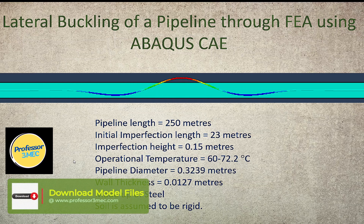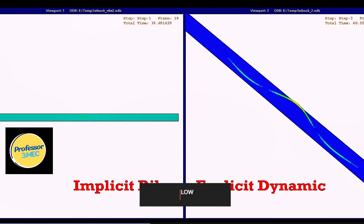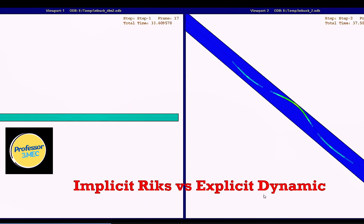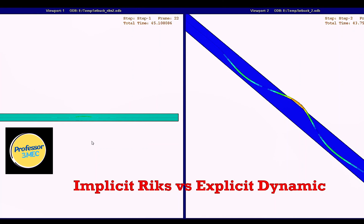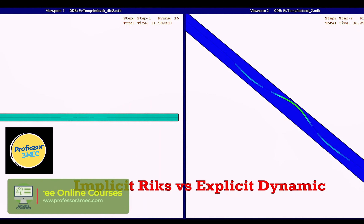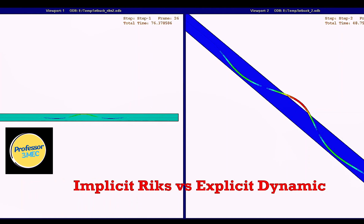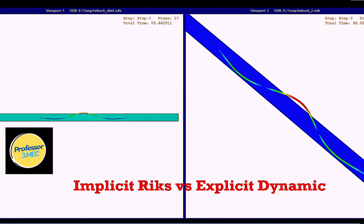The wall thickness is 0.0127 meters. The pipe is made of steel, so I will use steel material properties. Soil is assumed to be rigid. You will learn how to simulate lateral buckling using the implicit Riks method and the explicit dynamic method, so you can see which one is better.